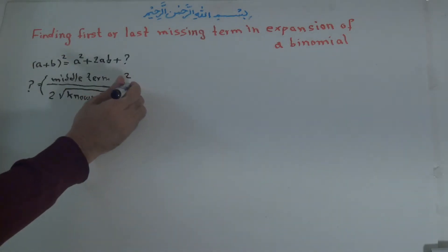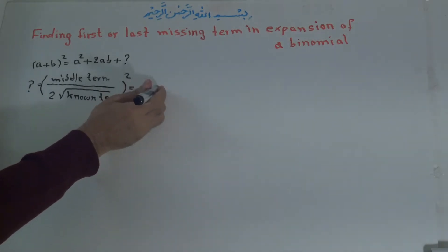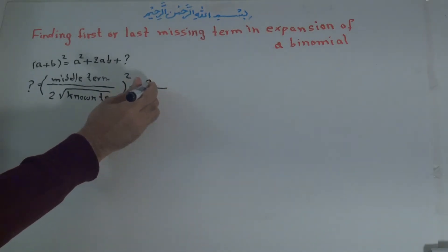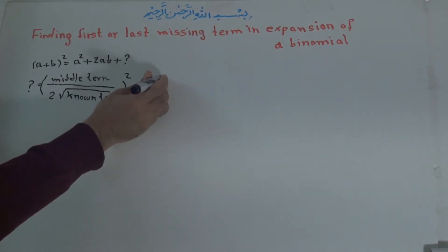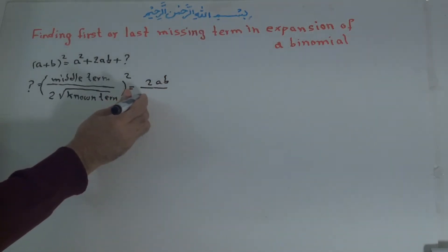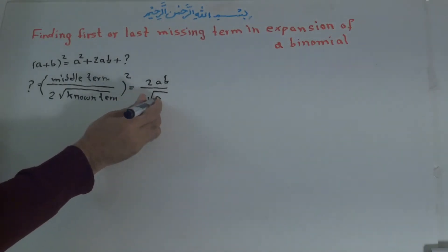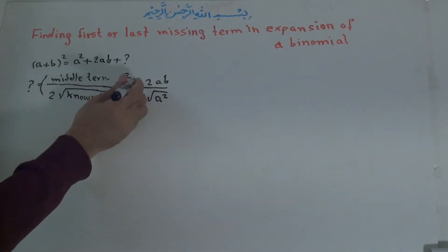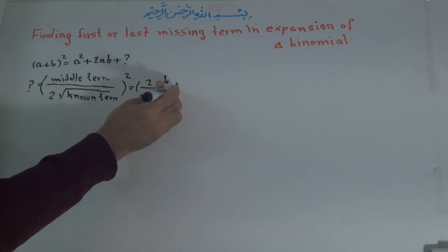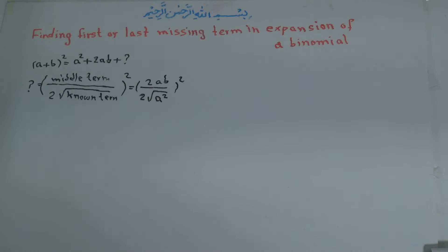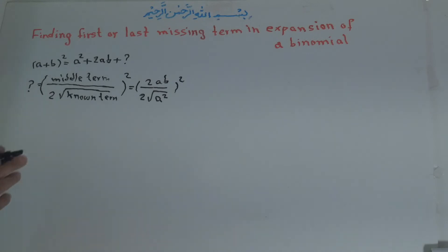For example here, the middle term is 2ab, so we have 2ab over 2 times the square root of the known term. The known term is a to the power of 2. After squaring, you can find this by identity number 1, or by multiplying the binomials — this is also the formula.